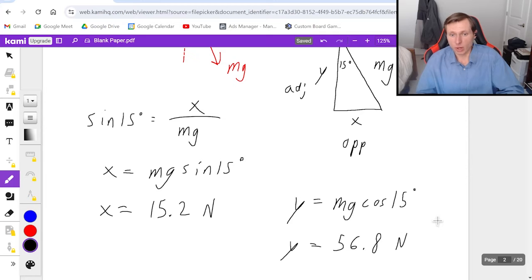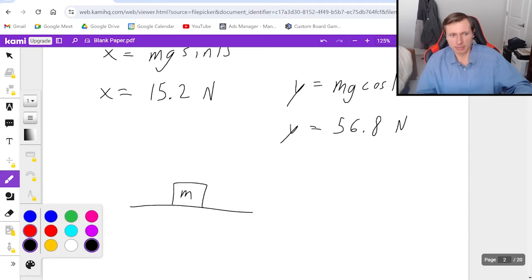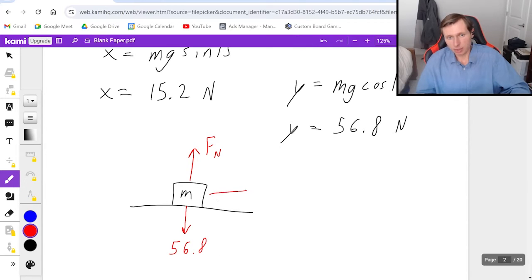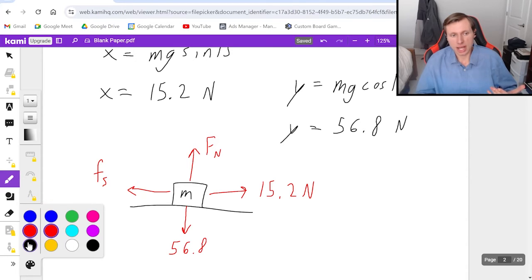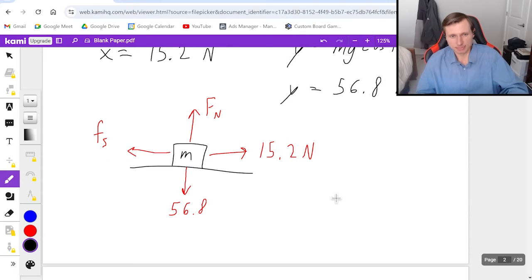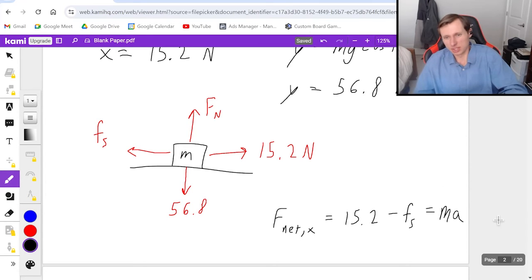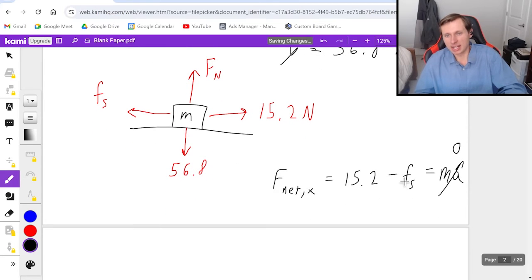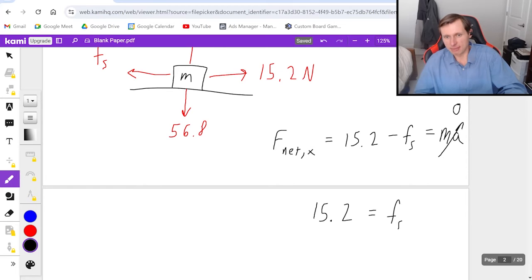So now that I have the x and y components, one thing you can do is you can redraw the free body diagram. Because normal force points up, the y component points down 56.8. The x component points to the right at 15.2 Newtons. And the only force pointing to the left is now Fs. So if I want to solve for static friction force, I'm using Newton's second law, it makes sense to use F_net x here because static friction is in the x direction. So in other words, I would say F_net x is equal to all the forces to the right 15.2 minus the forces to the left minus Fs. And I set that equal to mass times acceleration. Now we remember that this box is not moving. In other words, the acceleration is zero. And so that's great because it means I can add Fs to both sides. And 15.2 equals Fs there. I have my static friction force. It's 15.2 Newtons.